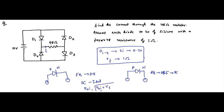This is the case here because we are supplied with the information that it is a silicon diode. Whenever you see silicon, you have to include the built-in potential — 0.7 volt. Forward resistance is mentioned, which means we have to include this 1 ohm. So each diode will be replaced with its equivalent circuit: the built-in potential of 0.7 volt and forward resistance of 1 ohm.